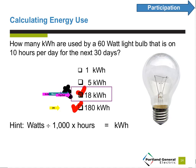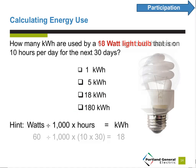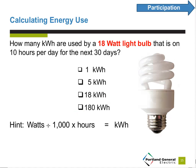The answer to the word problem: 60-watt bulb divided by 1,000, times 10 hours times 30 days — 300 hours — gives an answer of 18 kilowatt hours.